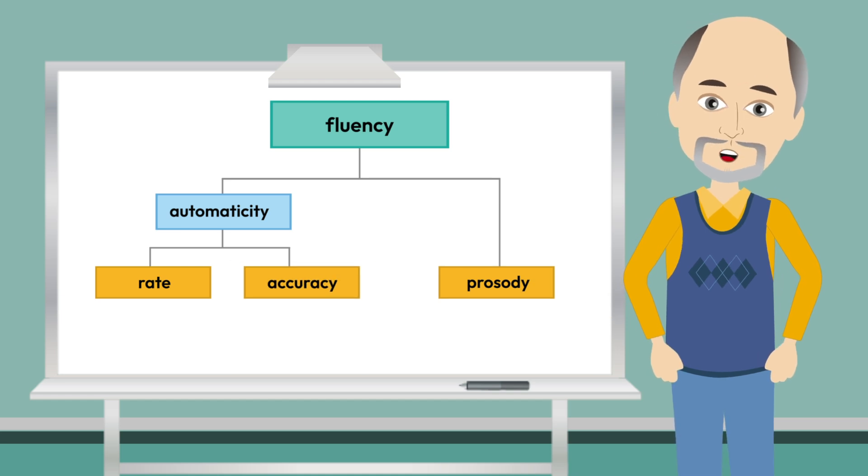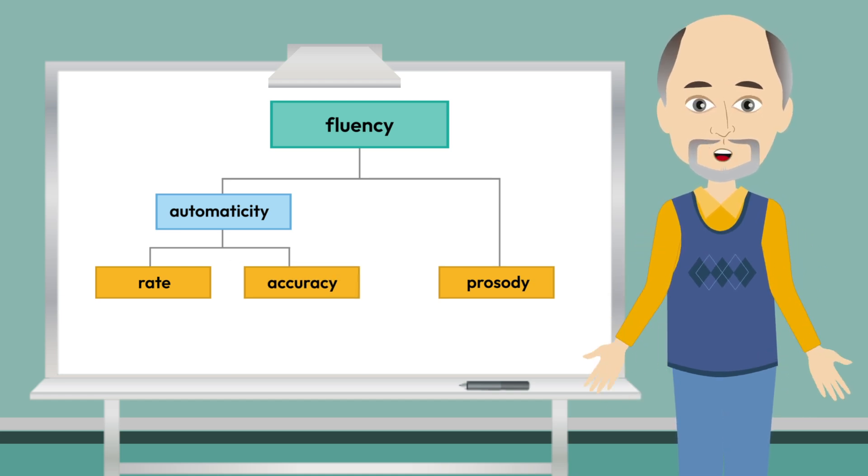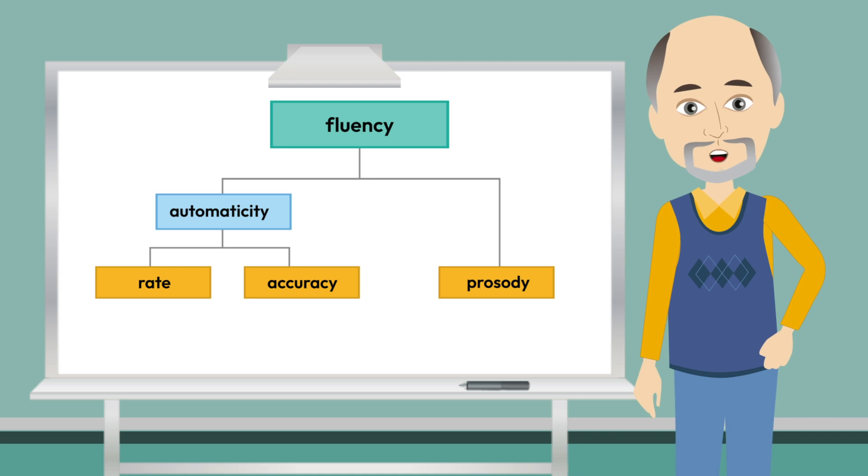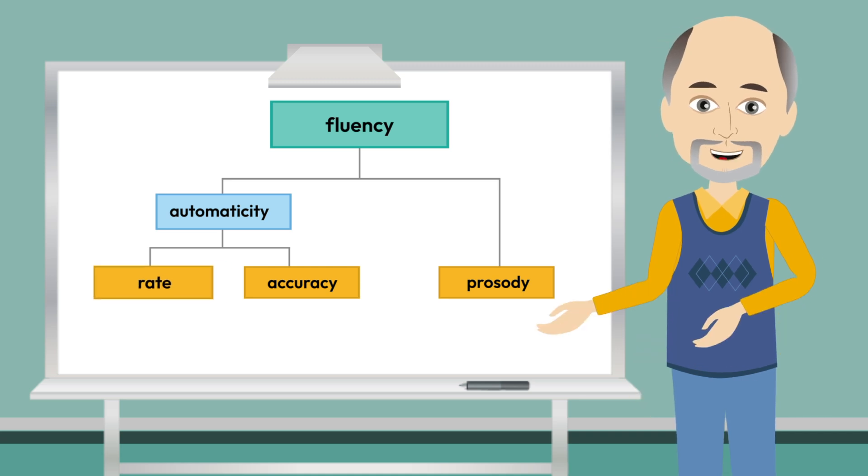Accuracy refers to error-free reading of the text. In order for students to read with a high level of accuracy, they must understand the alphabetic principle, be able to blend sounds into words, and know appropriate high-frequency words.